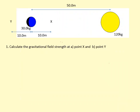This diagram is asking us to figure out the gravitational field at X and at Y. This problem is easier than the one before because it's one dimensional.